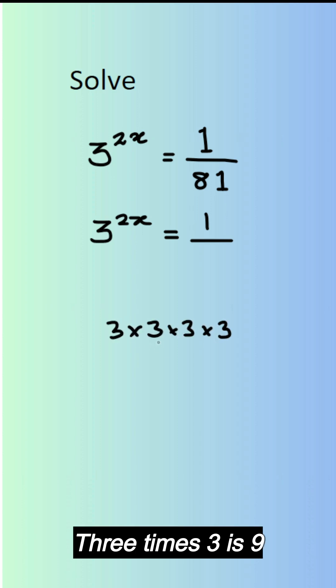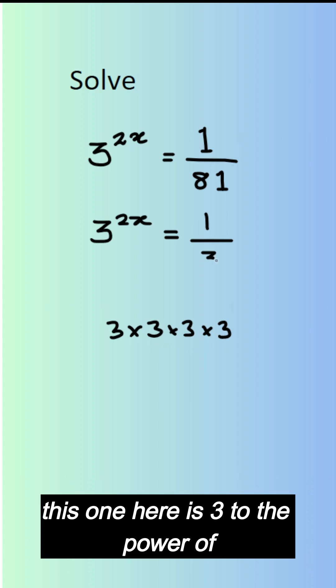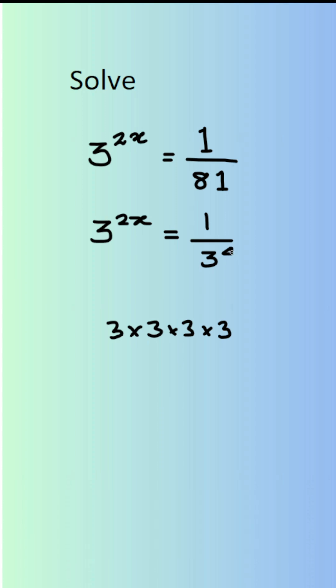So we know 81 is 3 times 3 times 3 times 3. 3 times 3 is 9, times 3 is 27, times 3 is 81. So obviously this is 3 to the power of 4.